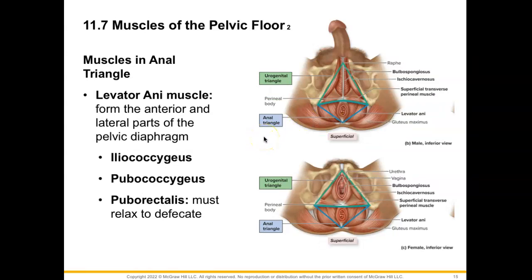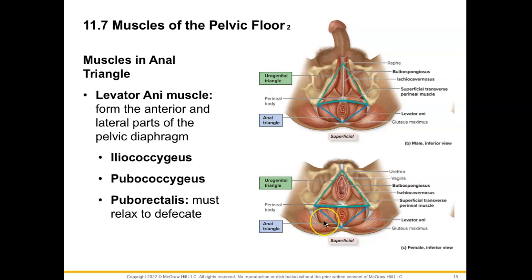One of the most important muscles here is the levator ani muscle, which forms the anterior and lateral parts of the pelvic diaphragm. We have three muscles that are important to this. The iliococcygeus is placed most lateral, then the pubococcygeus is the next one in, and finally the puborectalis — not pictured well here but visible in a deeper view. The puborectalis must relax in order to assist in defecation.